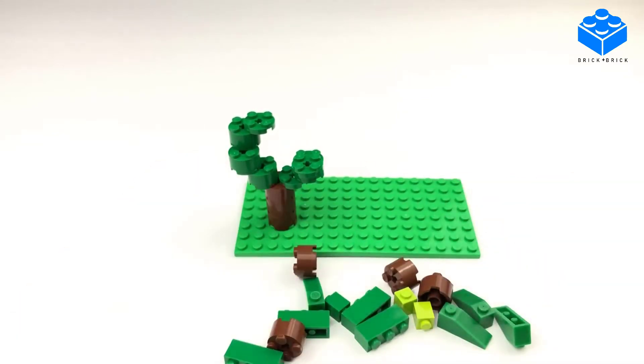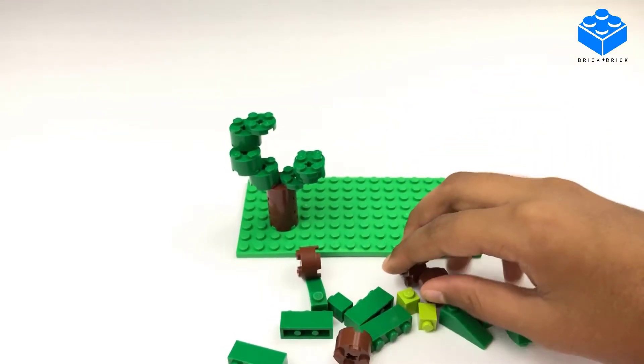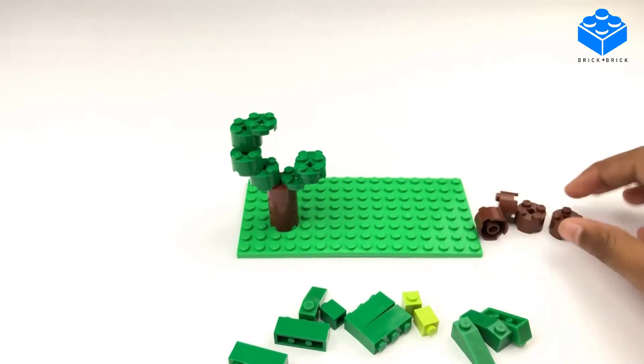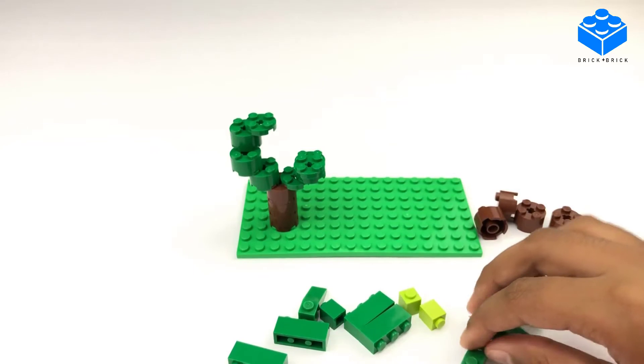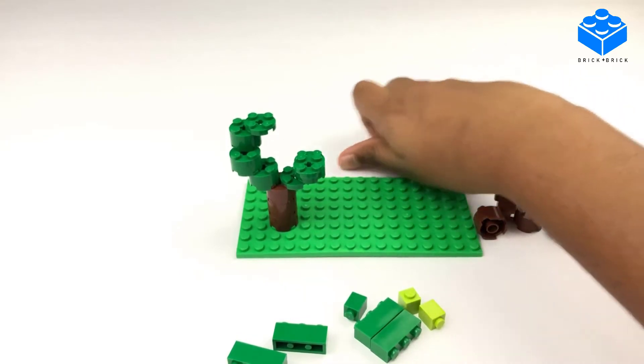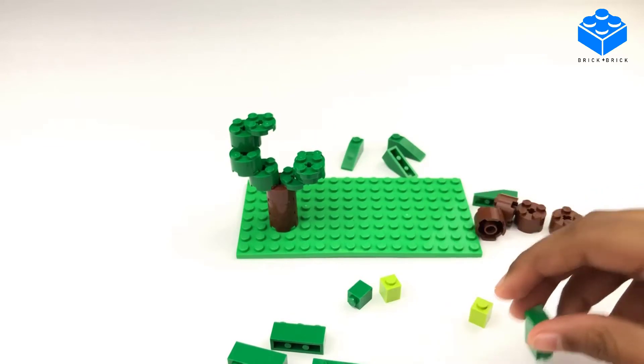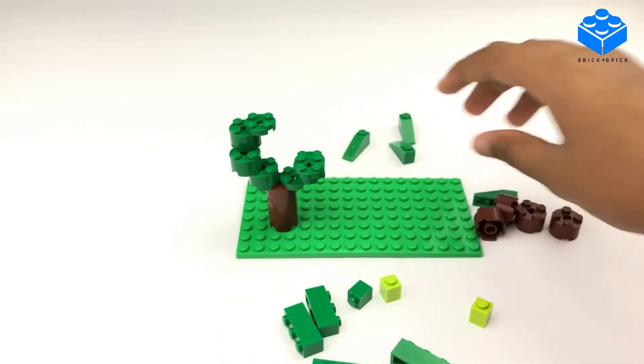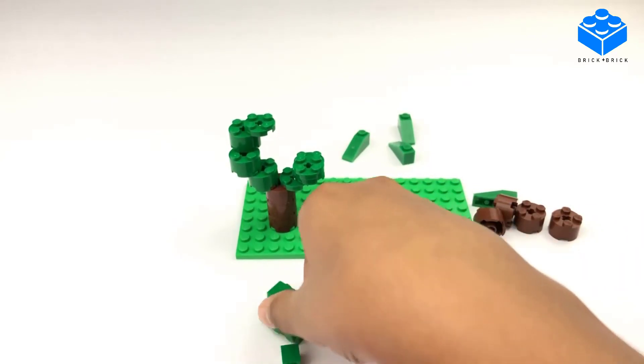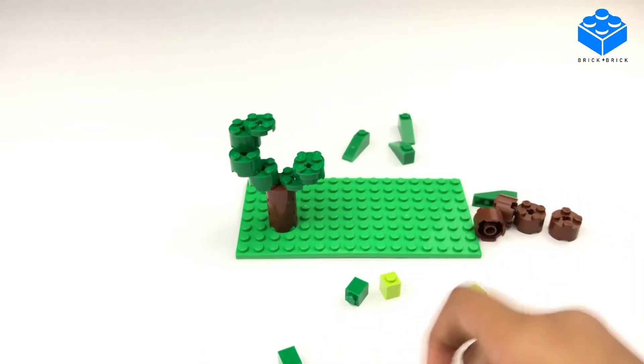Alright, so this build has slightly more pieces. So we have four brown cylinder pieces for the tree trunk, four one by three pieces that we're gonna use for the actual tree. And one, two, three, four one by three pieces.